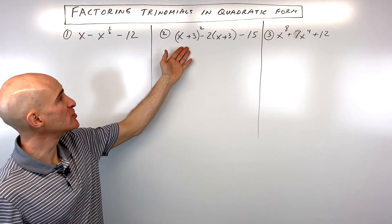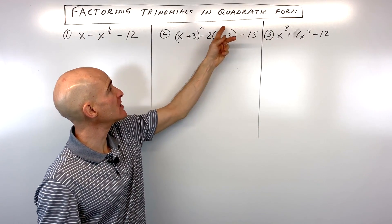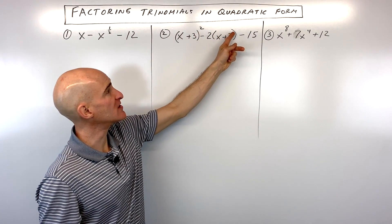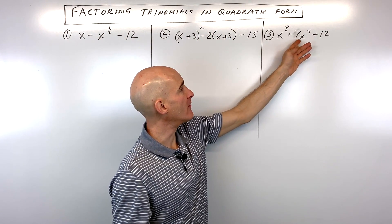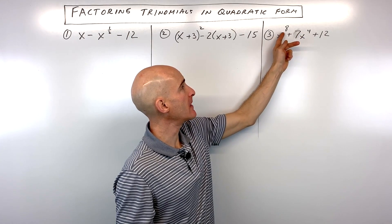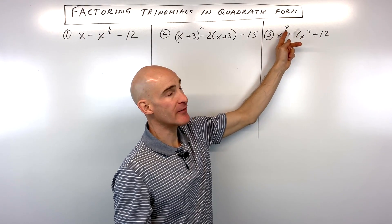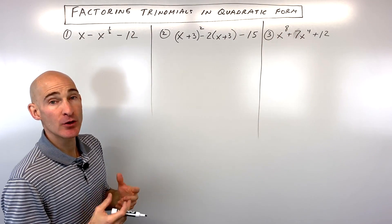So say for example number two, you can see this is x plus three to the first, this is x plus three squared. Notice that this middle exponent is half of this leading term's exponent. Same thing here, you have x to the fourth, that's half of eight. Four is half of eight, so we know it's in quadratic forms.